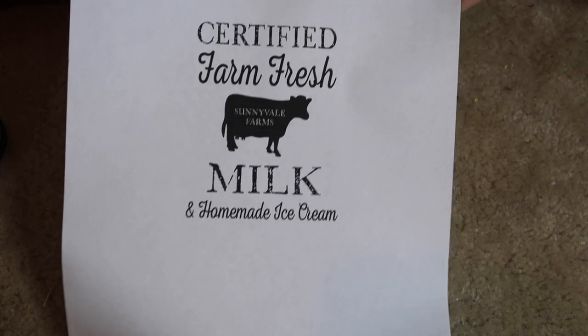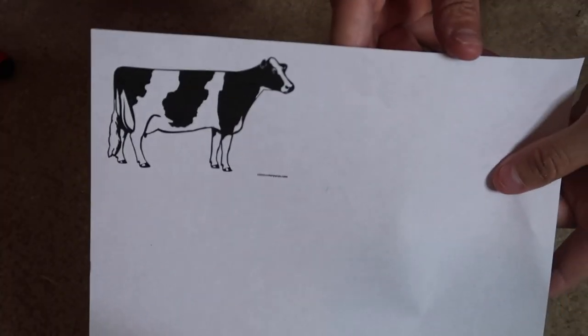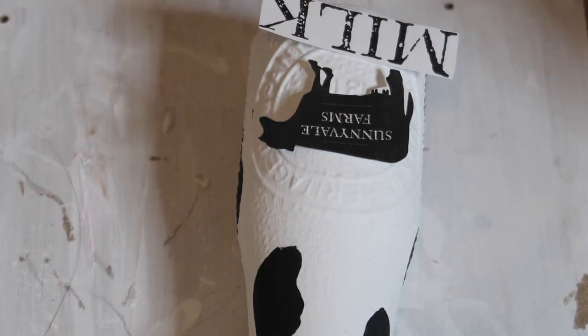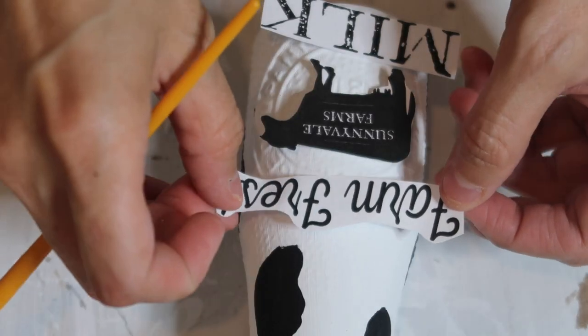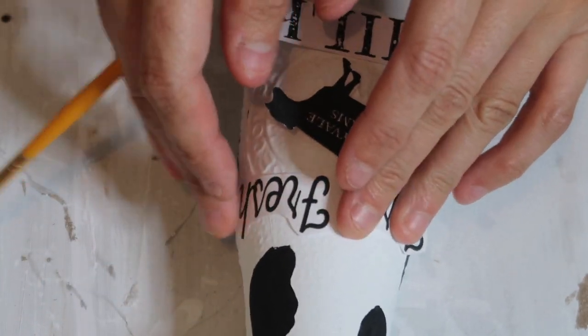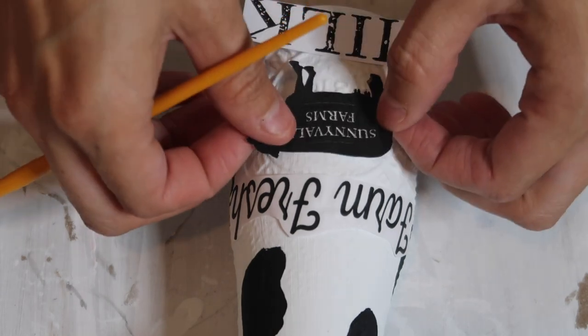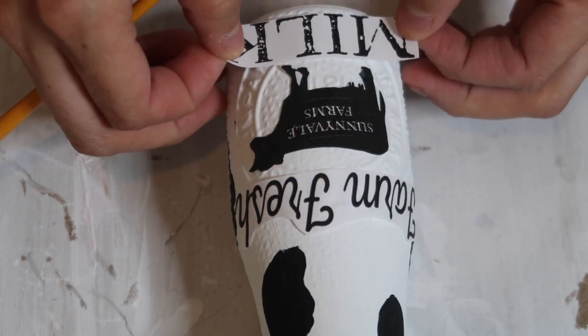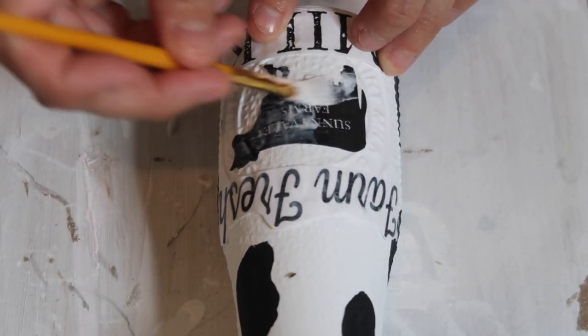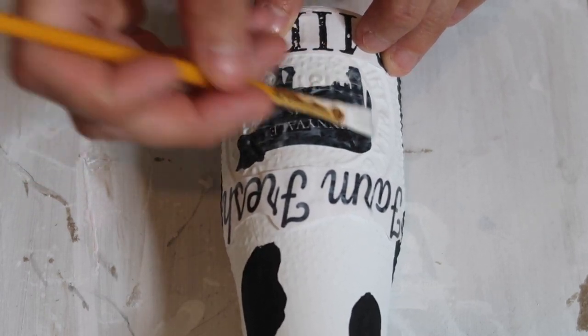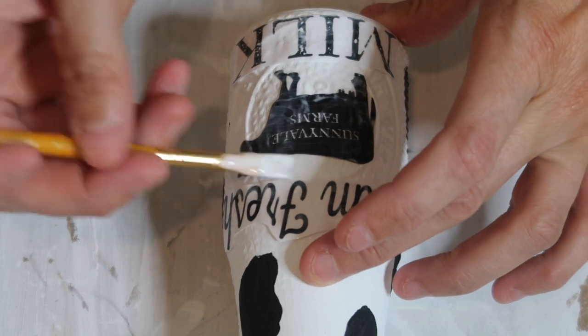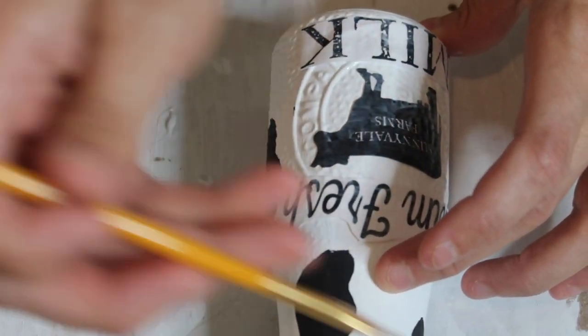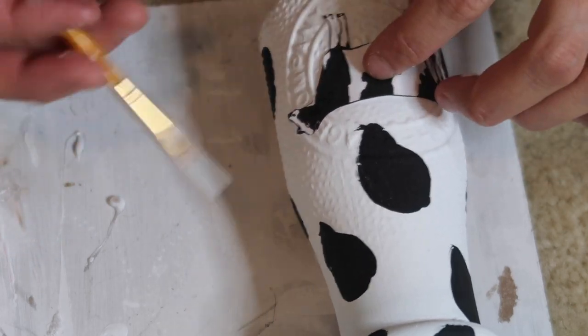Then I just grabbed some free printables from Pinterest. I got this certified farm fresh milk and homemade ice cream, and then this plain cow one. I took the farm fresh milk and I just kind of cut it out. I didn't use everything that it said, but I wanted to mod podge it onto this little milk glass. I'm just mod podging a couple things on there. I liked the farm fresh milk and I also liked the little cow. And then for the other one I'm just going to take the cow and I just cut them out and mod podge this one onto the middle.